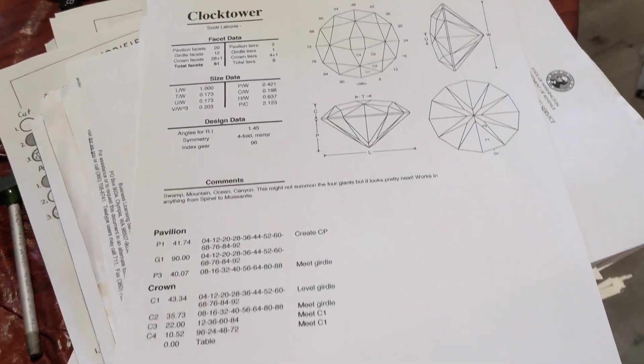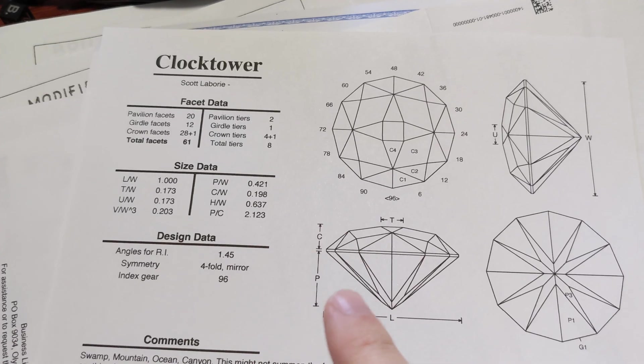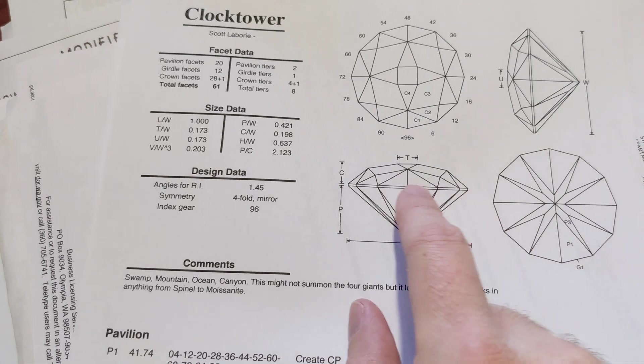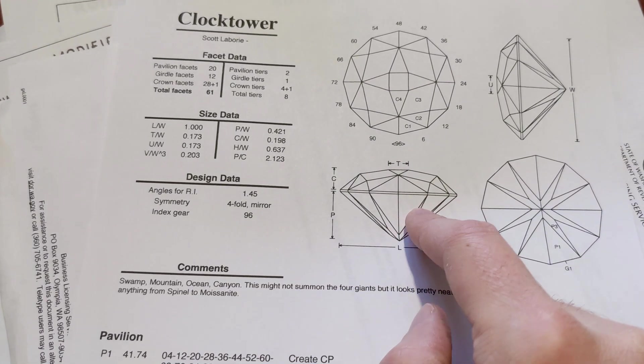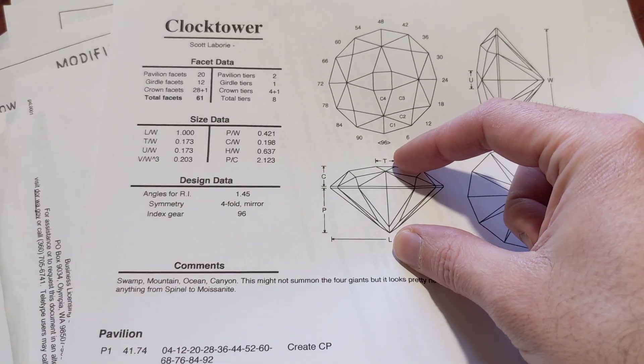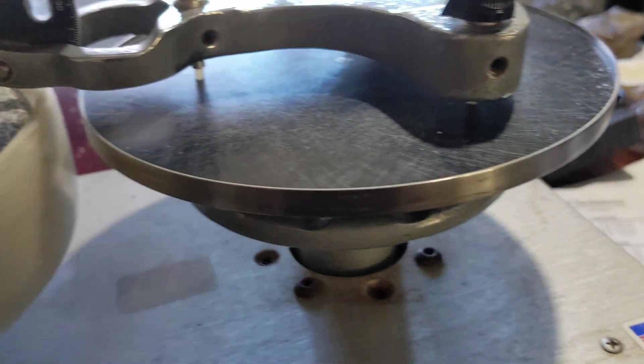And what I'm going to try is Scott Laboree's Clock Tower, which is available on the gemologyproject.com website. It's going to be kind of a shallow stone. I think I'm going to be able to cut a four millimeter across plus or minus stone. Unfortunately, that means the height is only going to be somewhere in the neighborhood of two and a half to three millimeters. So we are going to lose a bit of height on the stone.